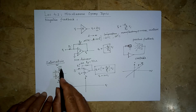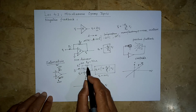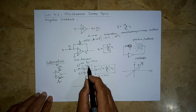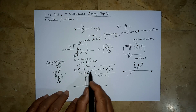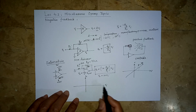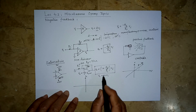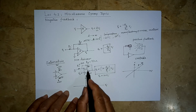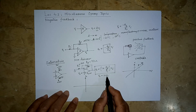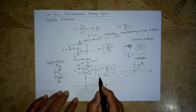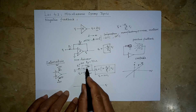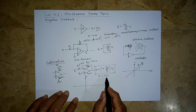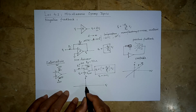Let us assume the opamp is powered by ±10V. The opamp output cannot go beyond these supply voltages, which we can verify in the lab with actual circuits. However, the expression VO = (1 + RF/RI) × VI does not tell us this — it does not limit the output. So if VI = 10V, it would suggest VO = 100V, which is additional knowledge we must know: the output cannot exceed the supply.